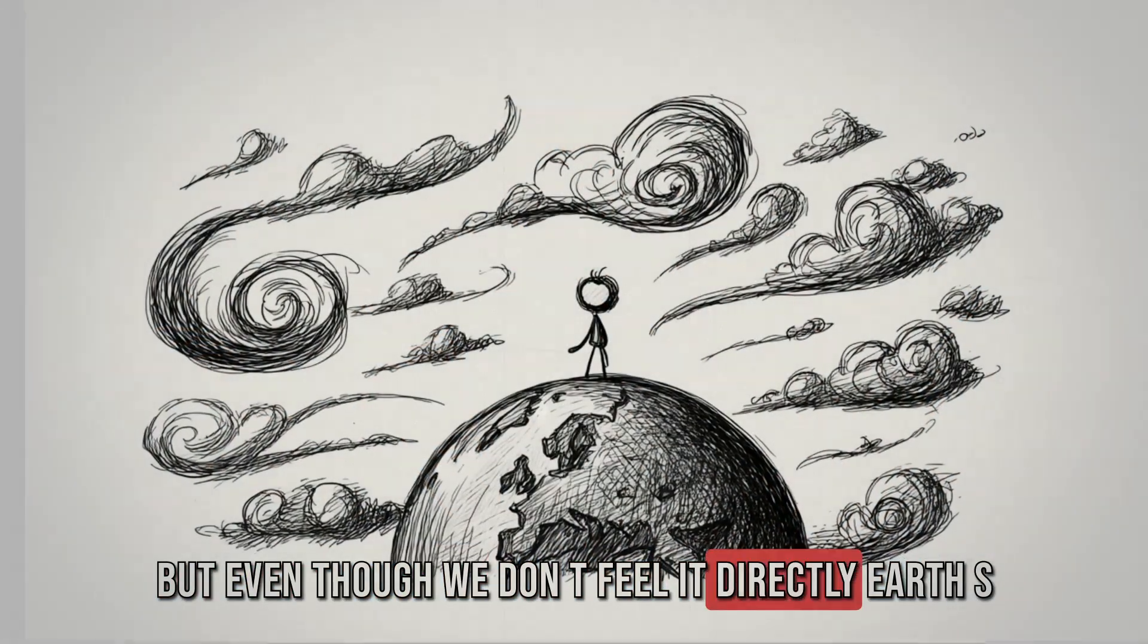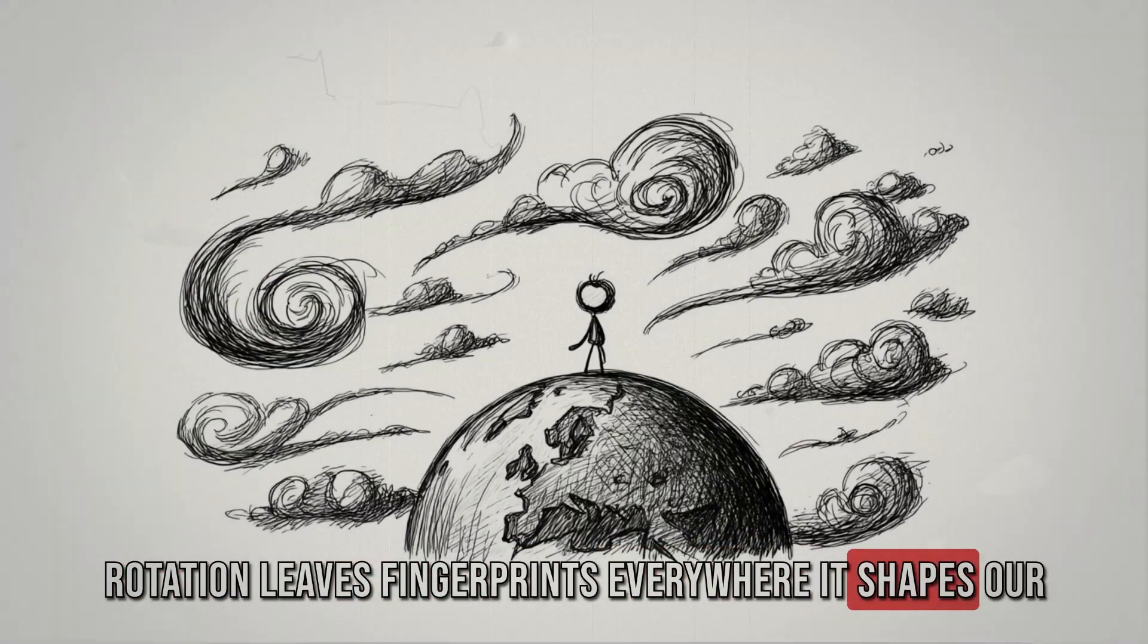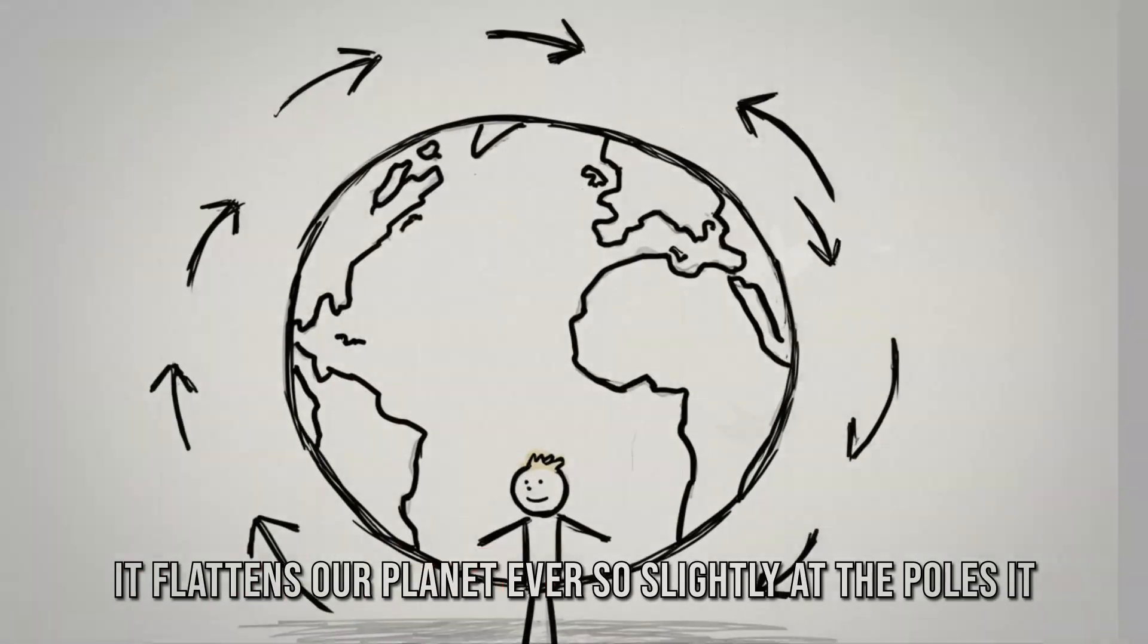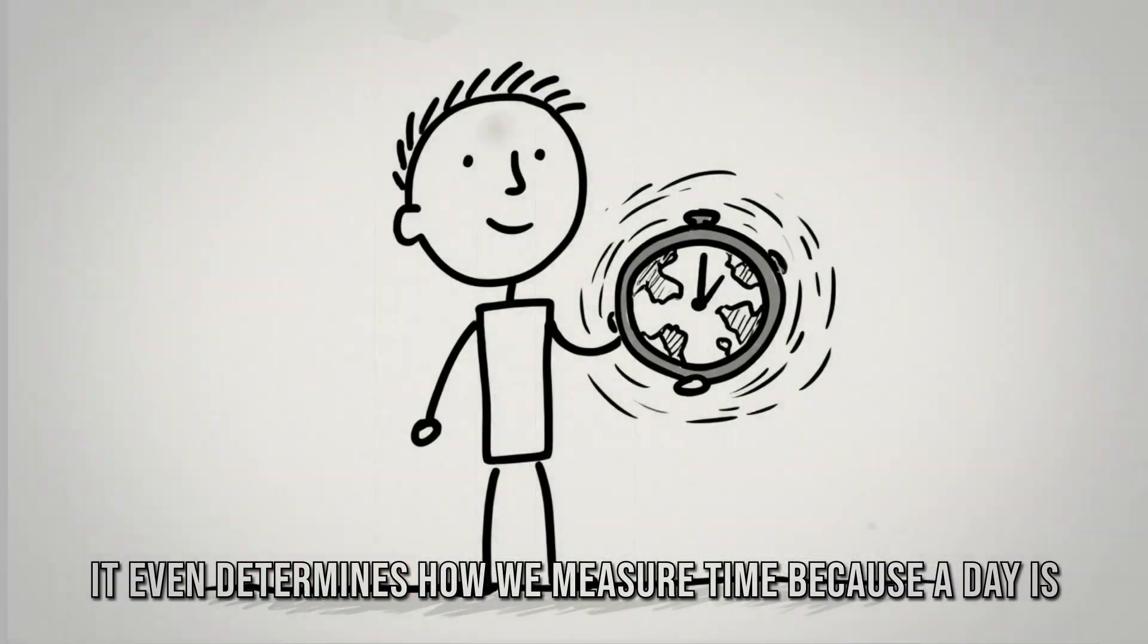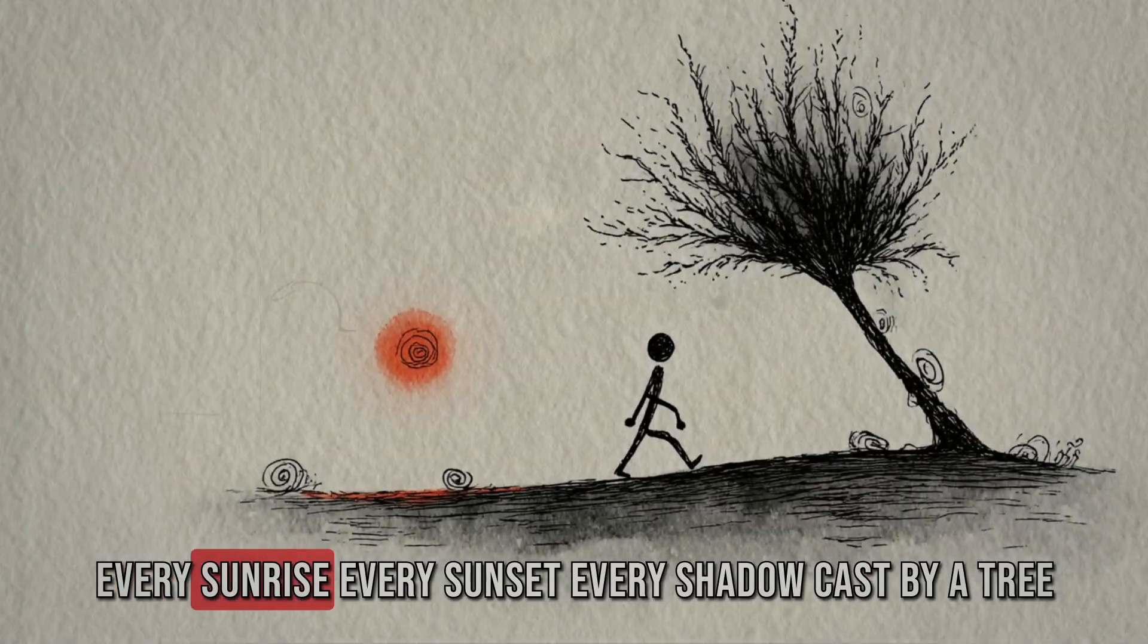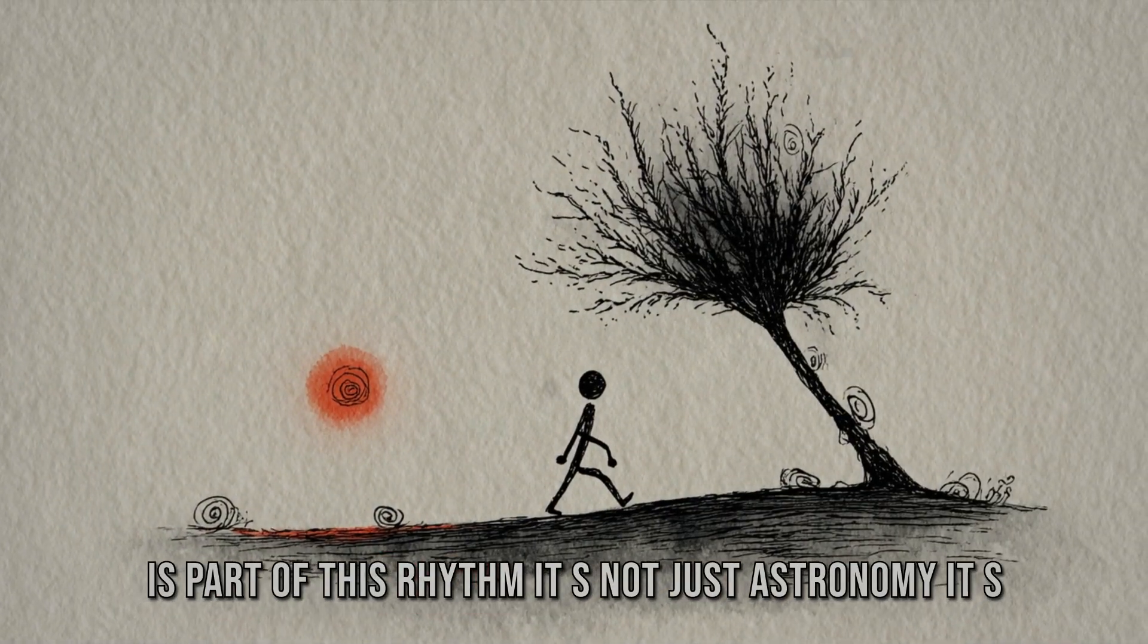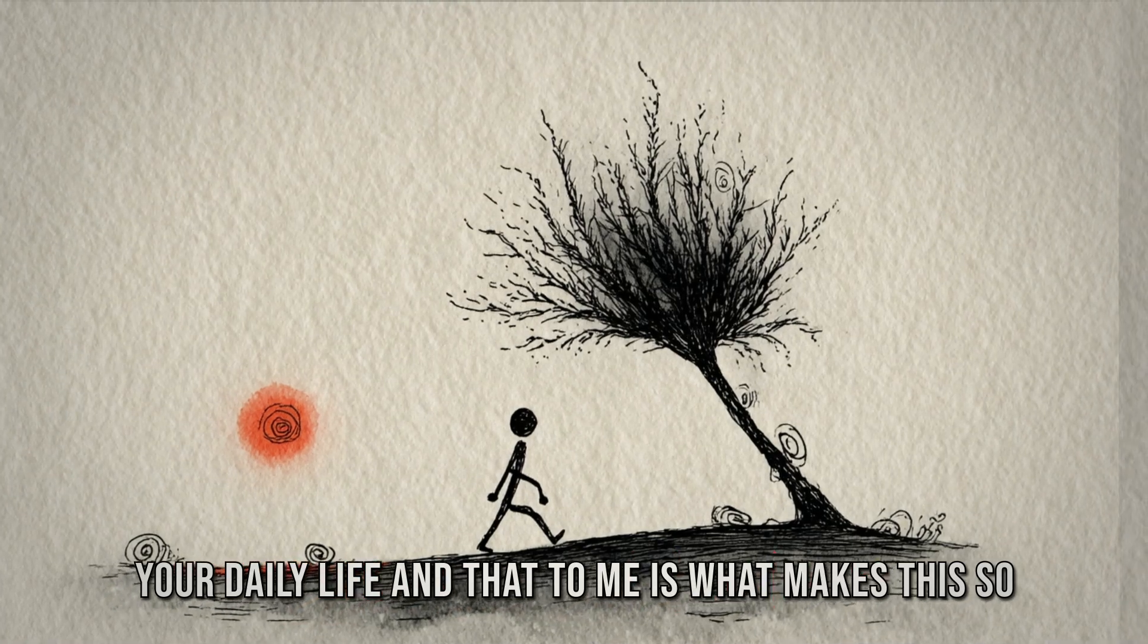But even though we don't feel it directly, Earth's rotation leaves fingerprints everywhere. It shapes our weather. It bends the path of hurricanes. It flattens our planet ever so slightly at the poles. It causes subtle variations in gravity. It even determines how we measure time, because a day is literally the time it takes to complete one spin. Every sunrise, every sunset, every shadow cast by a tree is part of this rhythm. It's not just astronomy. It's your daily life.